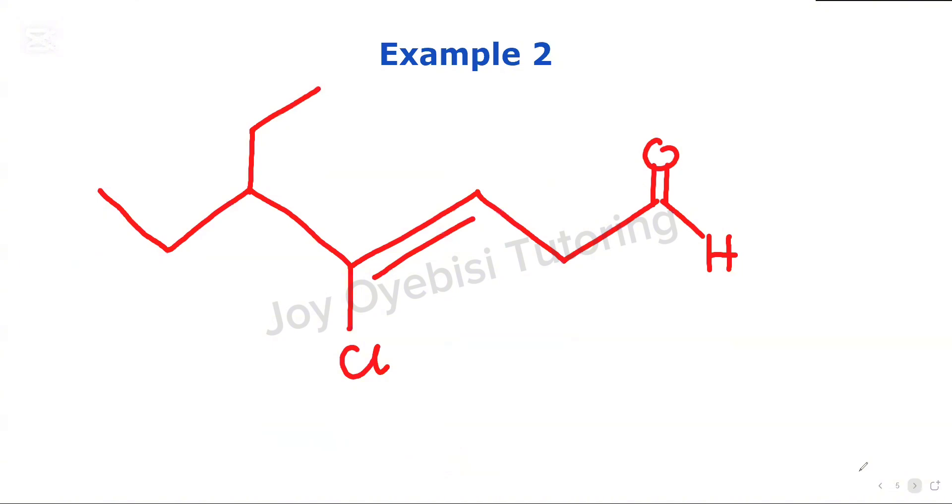The second example, you're given an aldehyde that has other functional groups attached. So aldehyde with a double bond attached, that's an alkene. Aldehydes have more priority than alkenes. So the way we're going to name this is, as usual, this is your carbon one. This is two. This is three. This is four. This is five, six, seven.